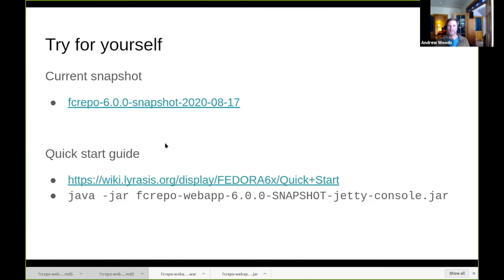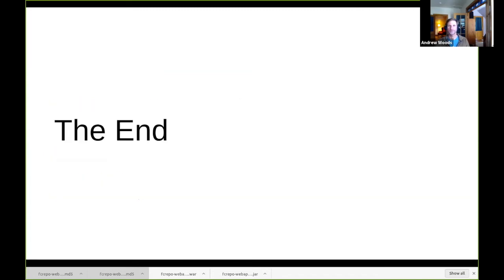Don't just trust me — I encourage you to download and give it a spin yourself. As of two days ago, there's the most recent version of the software. We haven't yet gotten to alpha release, but we hope to in this calendar year, and the feature set is coming along quite well. You can download it and use the quick start guide. There's an executable JAR — depending on your operating system, either click it or run 'java -jar' and Fedora is running. Create some resources and take a look at what's under the covers.